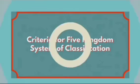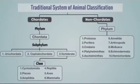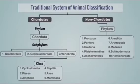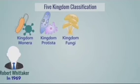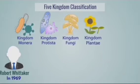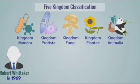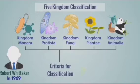The traditional system had a two-kingdom classification: one is Eukaryota and one is non-Eukaryota. Today we will see about five-kingdom classification. The five-kingdom classification was derived by Robert Whittaker, a scientist, in 1969. Animals are classified into five kingdoms: Kingdom Monera, Kingdom Protista, Kingdom Fungi, Kingdom Plantae, and Kingdom Animalia.